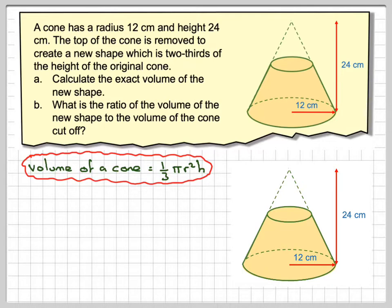Now we know the height of this frustum is two-thirds of 24, which means the remaining height is one-third of 24 because we're going to need to find this height here and this radius here. So this height here is one-third of 24 which is 8 cm. We'll mark that on our diagram.